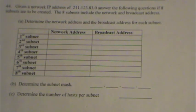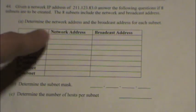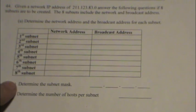Given a network IP address of 211.123.83.0, answer the following questions. If eight subnets are to be created, the eight subnets include the network and broadcast addresses.